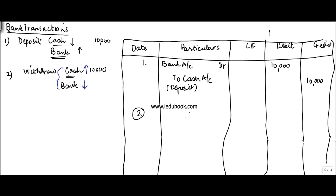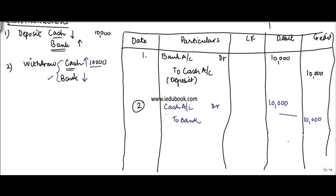So cash increases, cash is an asset, increase in asset is debited. So you make an entry cash account debit, how much, again 10,000. And the bank balance goes down, bank is an asset, decrease in the asset is credited to bank, bank 10,000 being cash withdrawn.